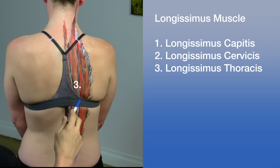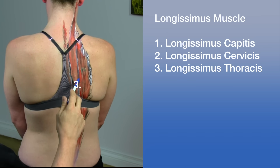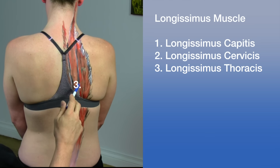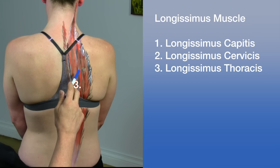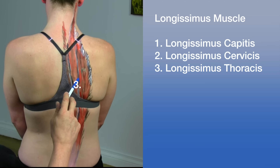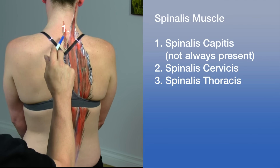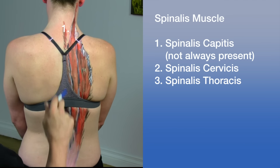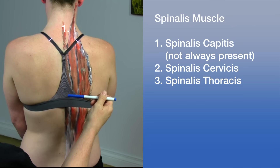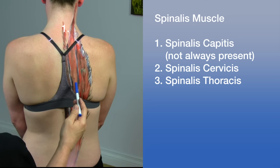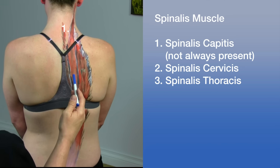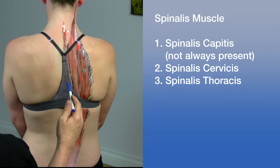Moving slightly medial, we reach the longissimus muscle. The longissimus capitis originates from the transverse processes of T3 to C4 and inserts on the mastoid process, which is part of the temporal bone. The longissimus cervicis runs from the transverse processes of the upper thoracic vertebrae to the lower cervical vertebrae.